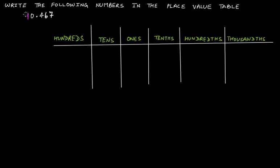Now let's say the number is 10.408. The decimal point comes here. To the left of the decimal point is always the ones place, and then we have the tens place. So at the tens place we have one, at the ones place we have zero. To the right of the decimal point is the tenths place, so we have four there, then at the hundredths place we have zero.